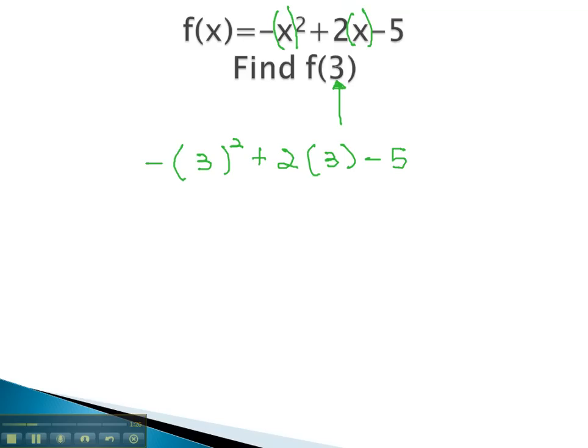After plugging 3 into the function for each of the variables, we can now evaluate using the order of operations. Exponents first, noticing the exponent is only on the 3. This gives us negative 9, plus 2 times 3, minus 5.